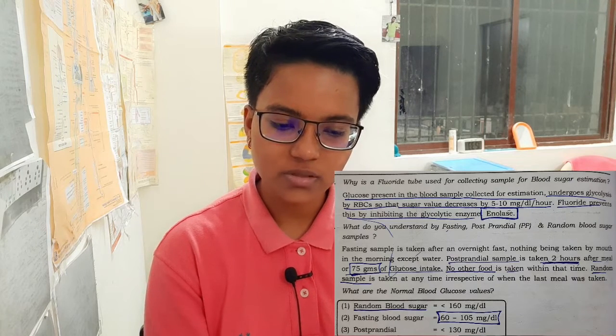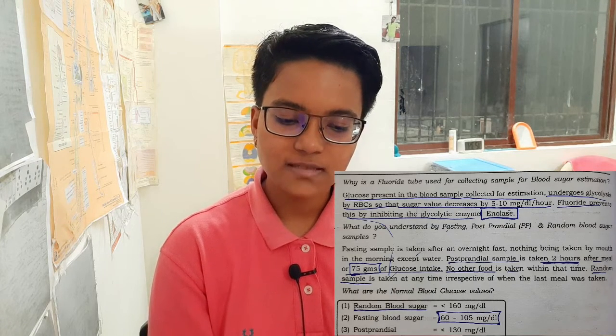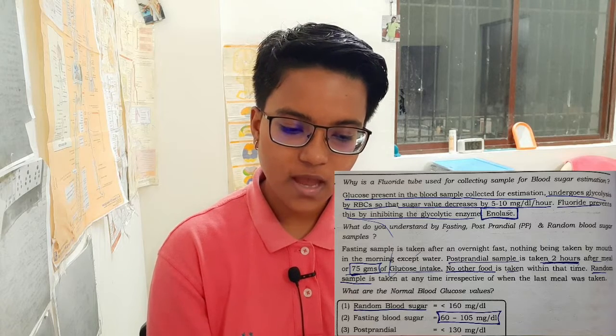Our first question is: why is a fluoride tube used for collecting a sample for blood glucose estimation? Glucose present in the blood sample collected for estimation undergoes glycolysis by RBC, so the sugar value decreases by 5 to 10 mg per dL per hour. Fluoride prevents this by inhibiting the glycolytic enzyme enolase.